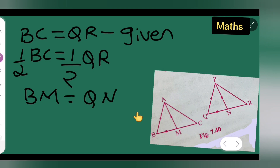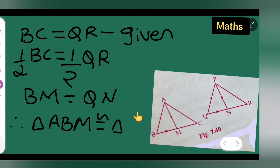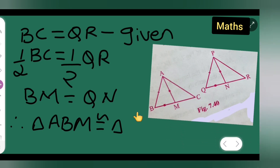Therefore, triangle ABM is congruent to triangle PQN. We have applied the Side-Side-Side (SSS) rule for this conclusion.